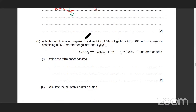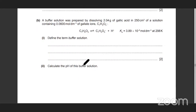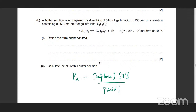The next one — a buffer solution was prepared by dissolving 2.04 grams of gallic acid in 250 cm³ of a solution containing 0.06 mol/dm³ of gallate ions. So you've got a buffer solution — a solution that resists a change in pH when you have a small amount of acid or alkali added to it. Calculate the pH of the buffer solution. The pH of the buffer solution uses the expression: Ka = [conjugate base][H⁺] / [acid]. The Ka value is 3.89 × 10⁻⁵. The conjugate base concentration is already given as 0.06 mol/dm³.